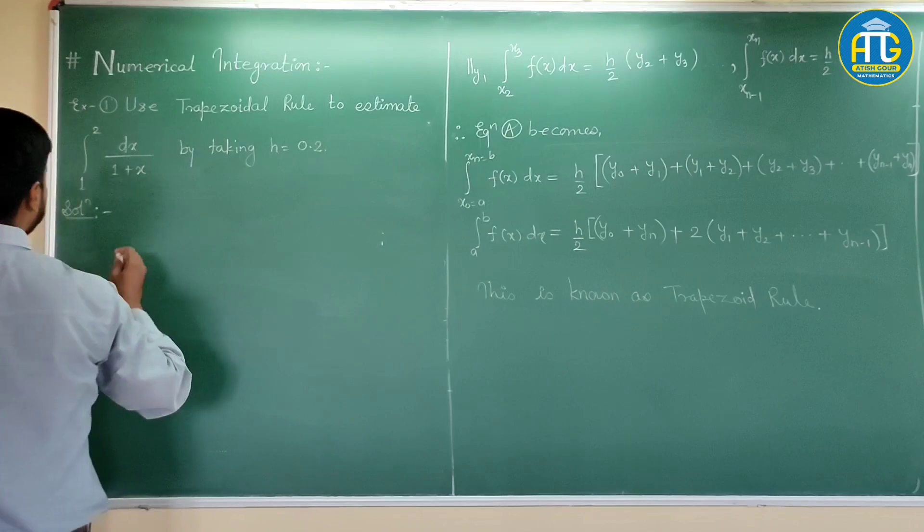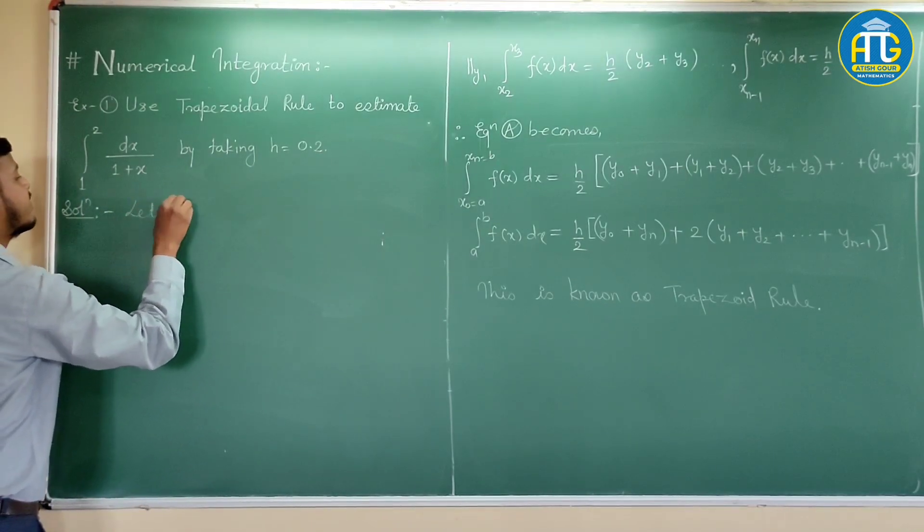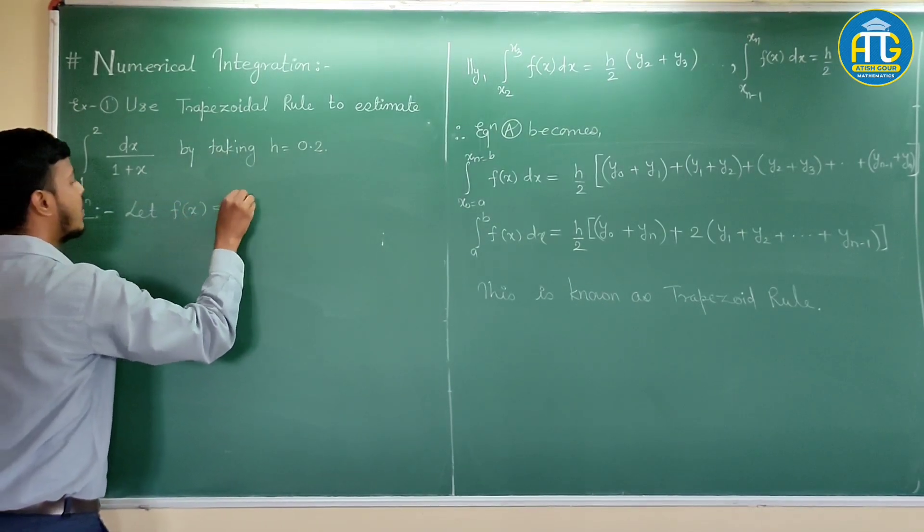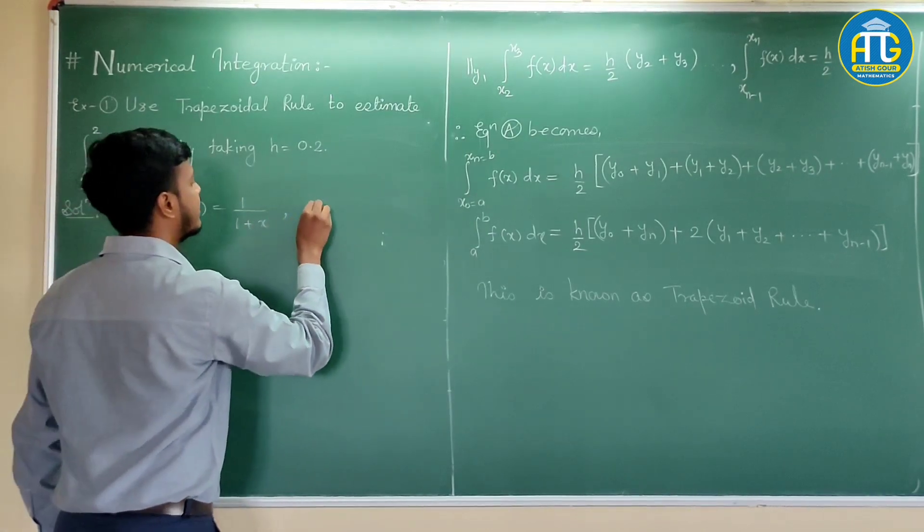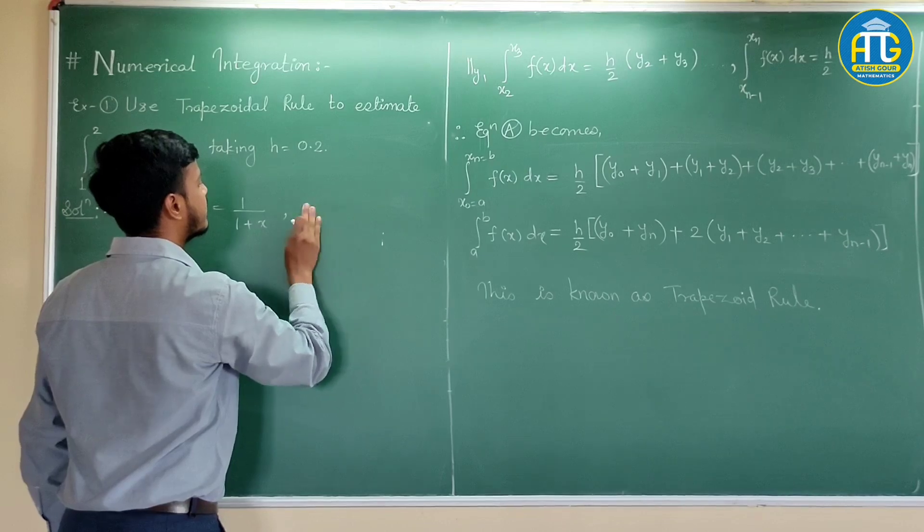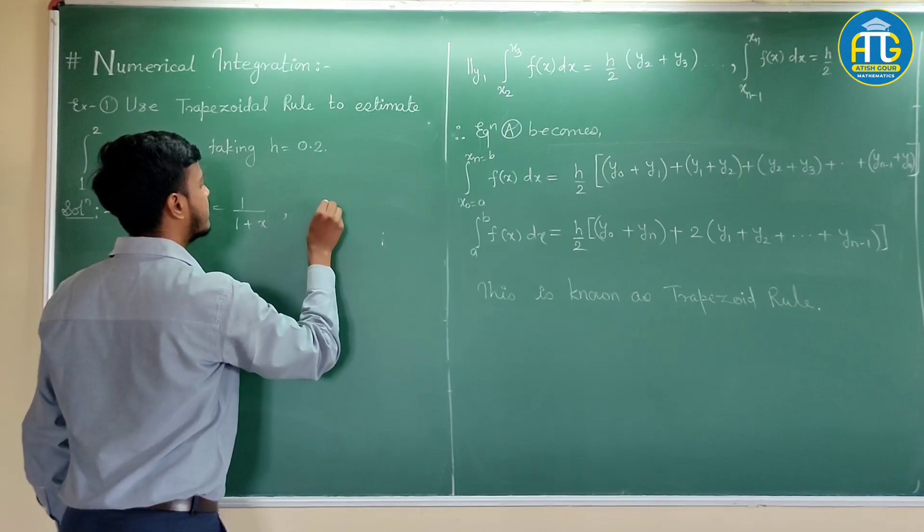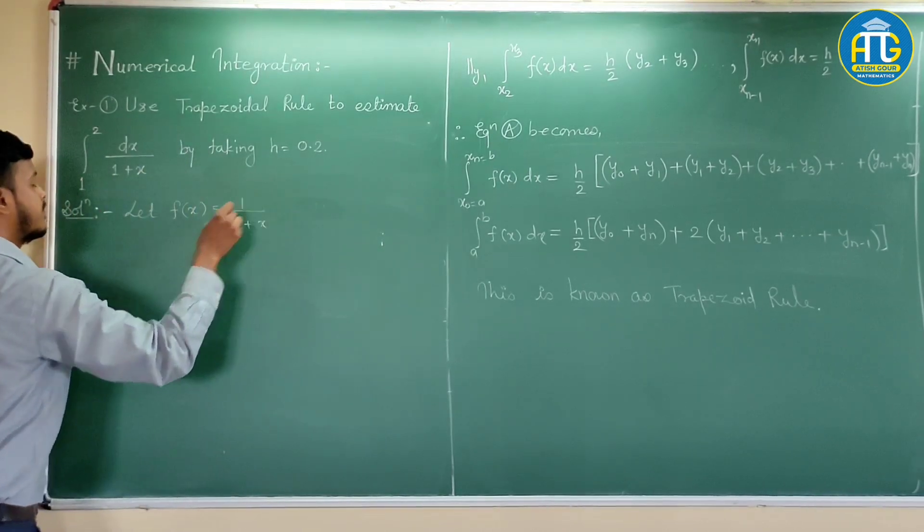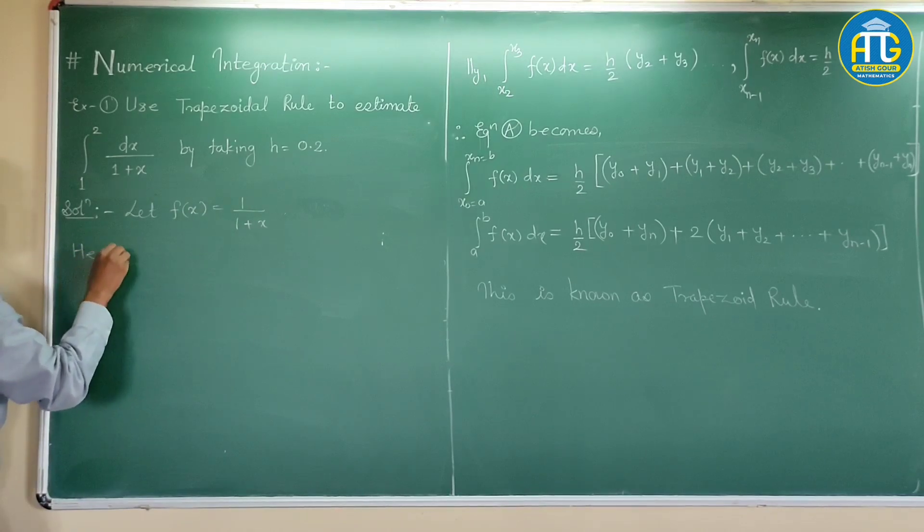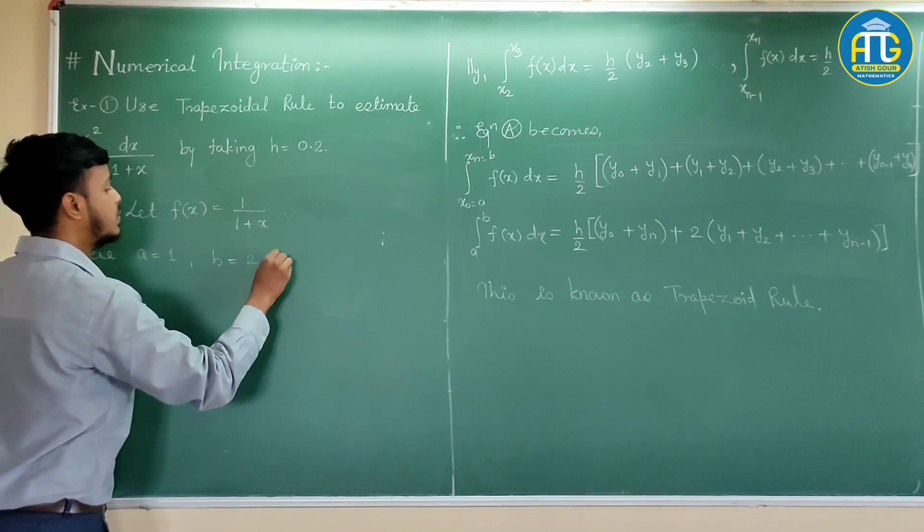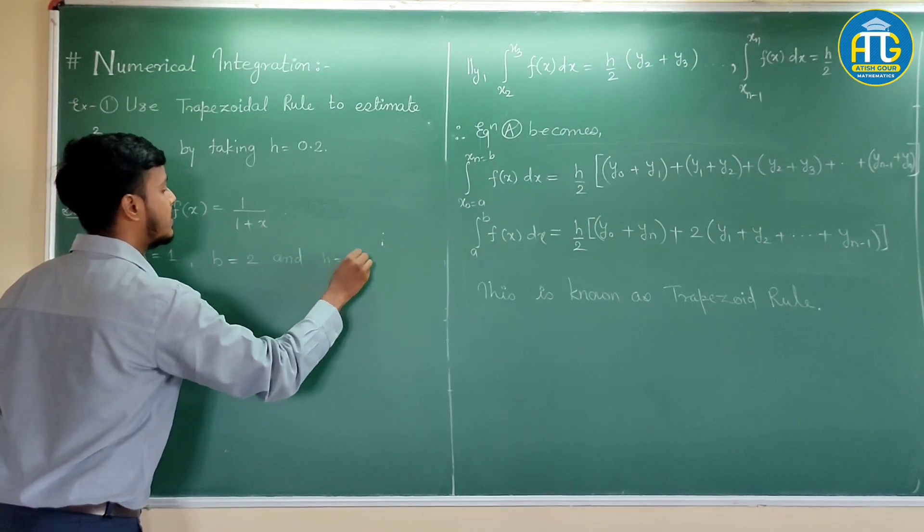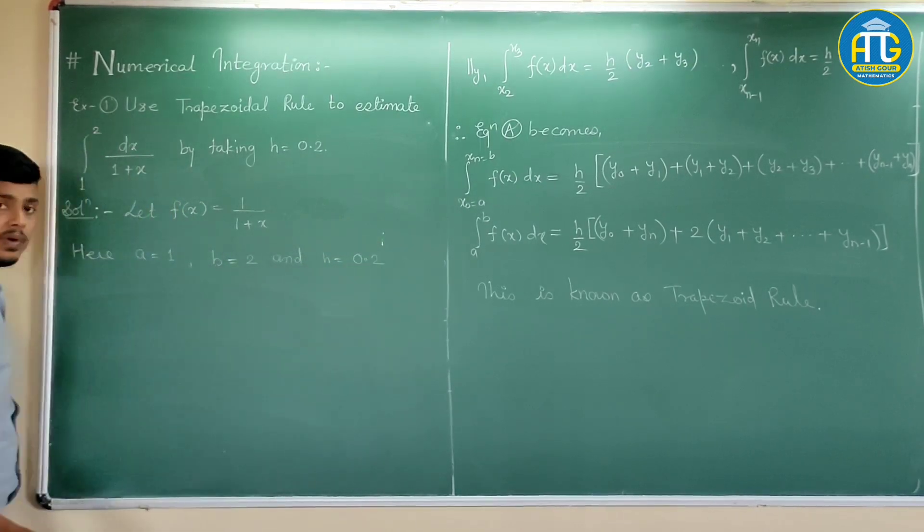So the solution will follow like f of x is equal to 1 upon 1 plus x. What are the limits? Here, a is equal to 1, b is equal to 2 and h is equal to 0.2.